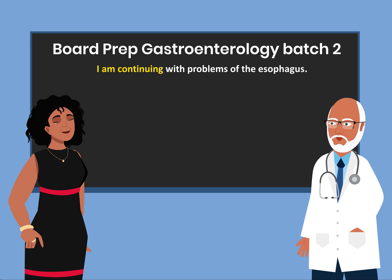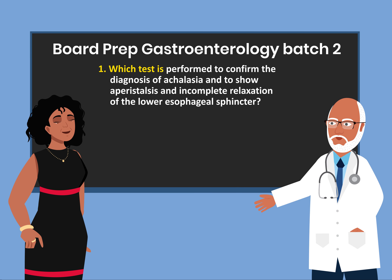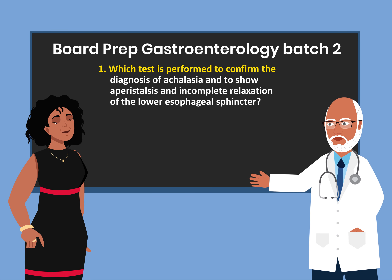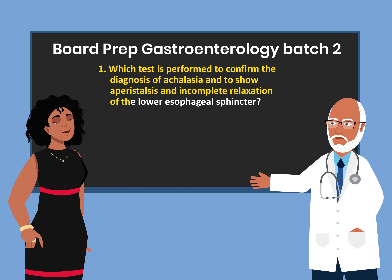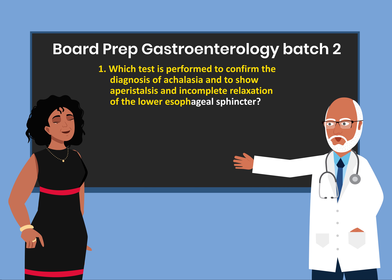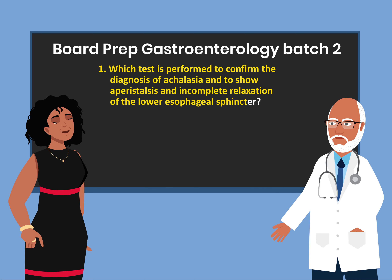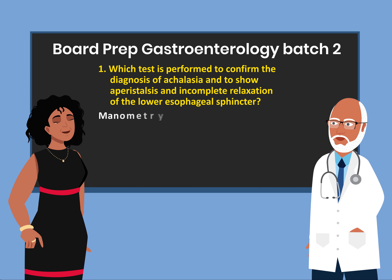I'm continuing with problems of the esophagus. Question 1: Which test is performed to confirm the diagnosis of achalasia and to show aperistalsis and incomplete relaxation of the lower esophageal sphincter? Manometry.